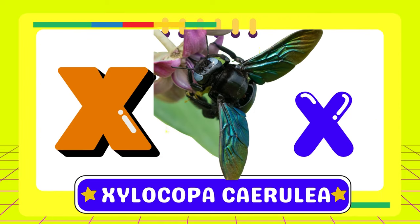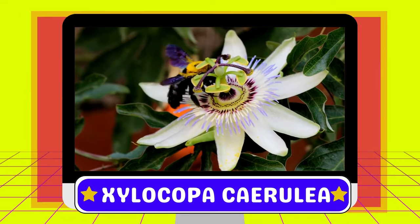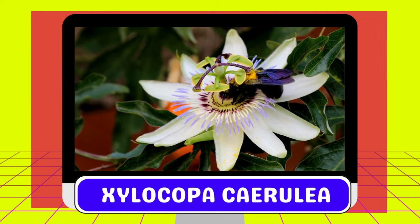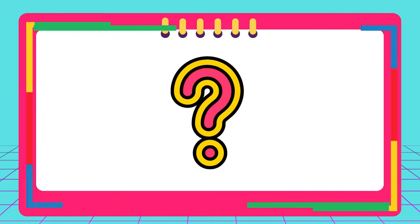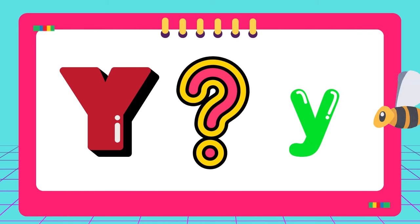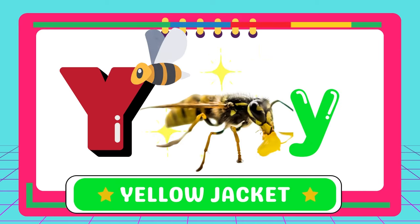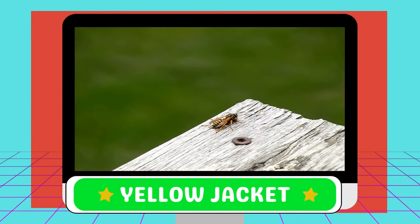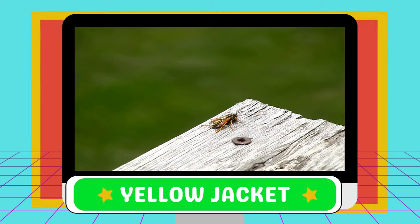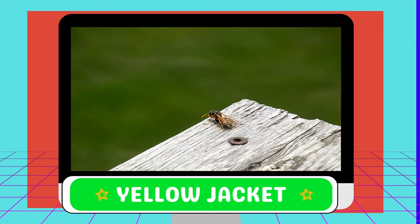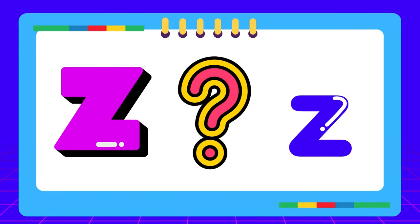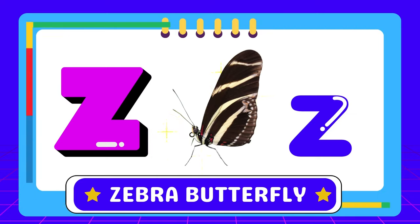X — X for xylocopa carulia. Y — Y for yellow jacket. Z — Z for zebra butterfly.